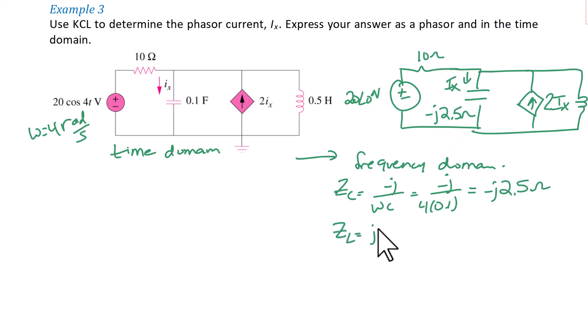The impedance of the inductor is going to be J omega L. So that's going to be J times 4 times 0.5, which is J2 ohms.